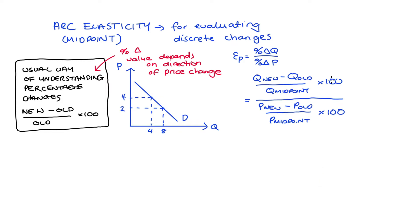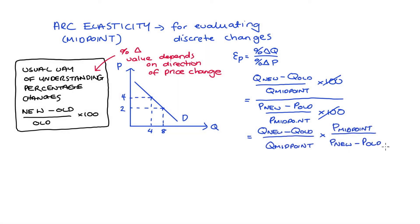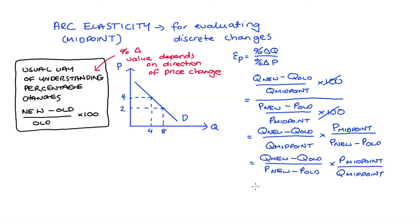Once we get there the 100s cancel out. We can rewrite this ratio of ratios by inverting the denominator and bringing it up as a multiplication. We're left with the change in quantity divided by the midpoint of the quantity change, multiplied by the midpoint of the price change divided by the change in price. We can rearrange this to get delta Q over delta P multiplied by the midpoint of price over the midpoint of quantity — and that's our arc or midpoint elasticity formula.